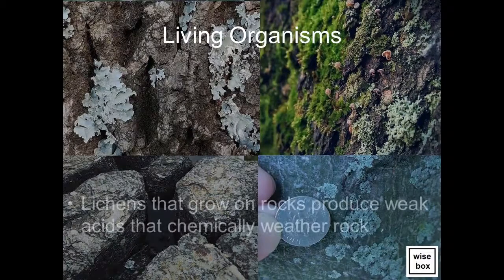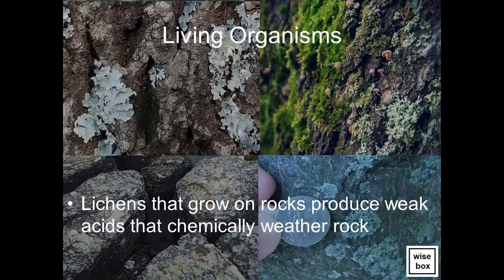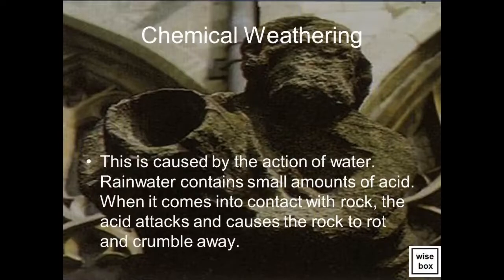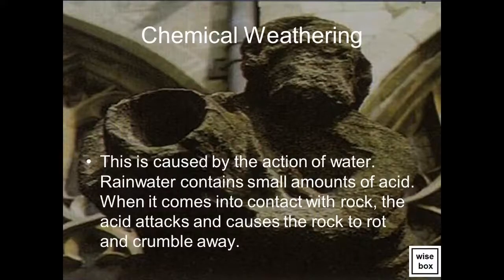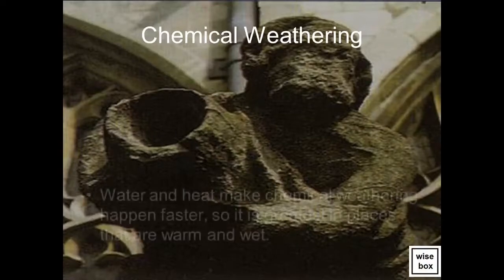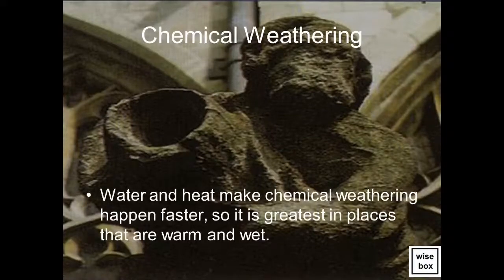Living organisms also contribute to chemical weathering. Lichens that grow on rocks produce weak acids that chemically weather rock. Chemical weathering is mainly caused by the action of water. Rainwater contains small amounts of acid, and when it comes into contact with rock, the acid attacks and causes the rock to rot and crumble away. Water and heat make chemical weathering happen faster, so it is greatest in places that are warm and wet.